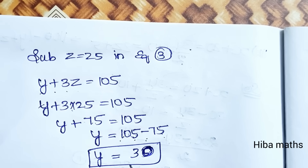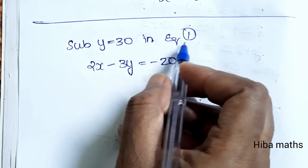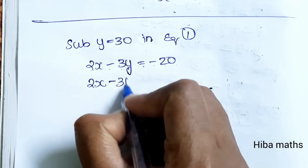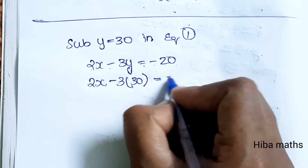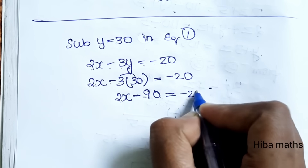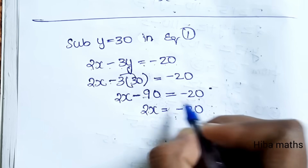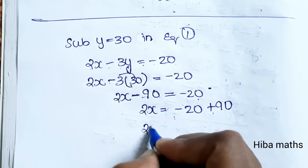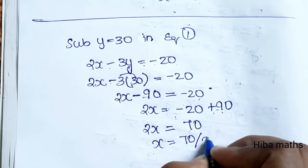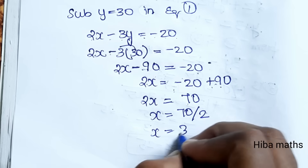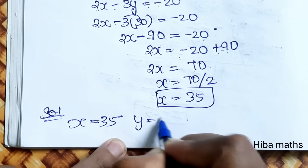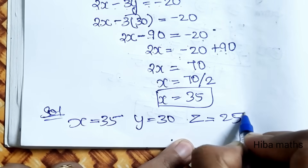Now substitute y equals 30 into equation 1: 2x minus 3 into 30 equals minus 20, so 2x minus 90 equals minus 20, giving 2x equals 70, so x equals 35. Solution: x equals 35, y equals 30, z equals 25. This is a very easy answer to find. Thank you so much for watching.